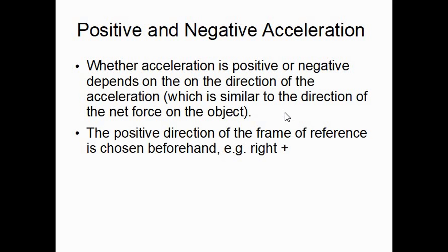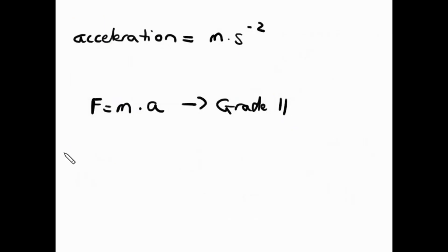The positive direction of the frame of reference is chosen beforehand. Example, right is positive. So, if we have a direction here, our object is going in this direction, we know that acceleration is going to be positive.